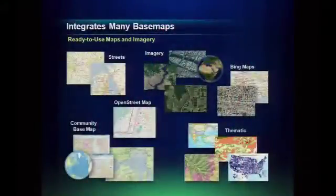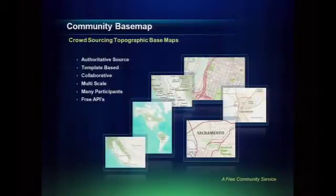This requires ready-to-use base maps and imagery. We've integrated a whole family of these, all the way from commercial ones like Microsoft's Bing Maps to OpenStreetMap, VGI source material, street maps, image maps, thematic maps, and also something new called a community base map — a crowdsourcing effort to bring together topographic base maps from authoritative sources. An agency downloads a template, pours their data into it, creates raster cache maps, and serves it up in a tiled environment. My colleague Bernie is going to show that live.